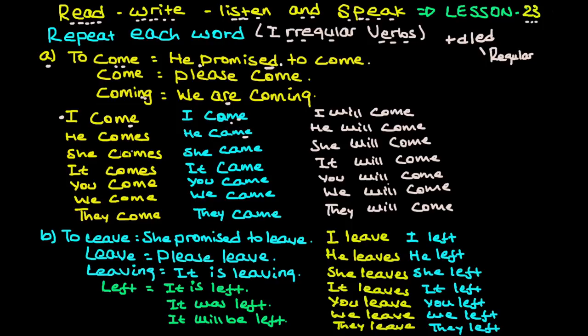Now let's practice the conjugations. Present tense: I come, he comes, she comes, it comes, you come, we come, they come. Past tense: I came, he came, she came, it came, you came, we came, they came. Future tense: I will come, he will come, she will come, it will come - for example, a car will come. You will come, we will come, they will come.